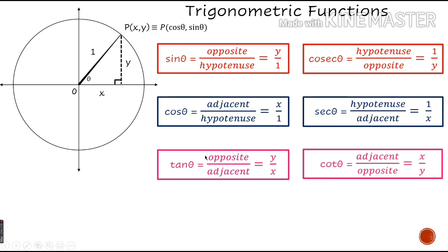All of you know that tan theta equals sine theta upon cos theta, cosec theta is 1 upon sine theta, sec theta is 1 upon cos theta, and cot theta is 1 upon tan theta, or cos theta upon sine theta.